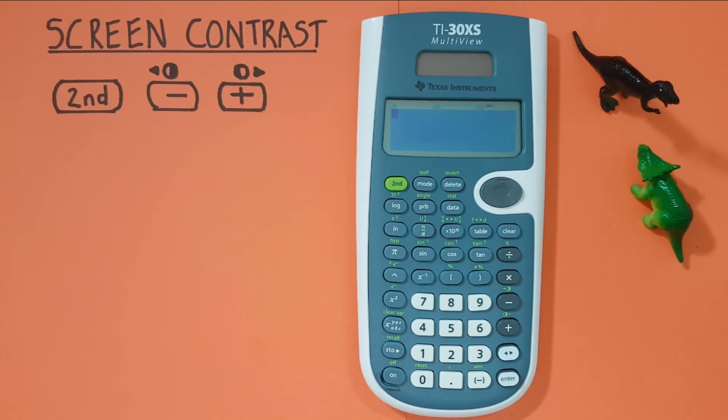If you want to quickly return your screen to its normal contrast, let's say you've gone too far in one direction and don't want to have to go all the way back, you can do this by resetting your calculator by pressing both the on and clear buttons at the same time.